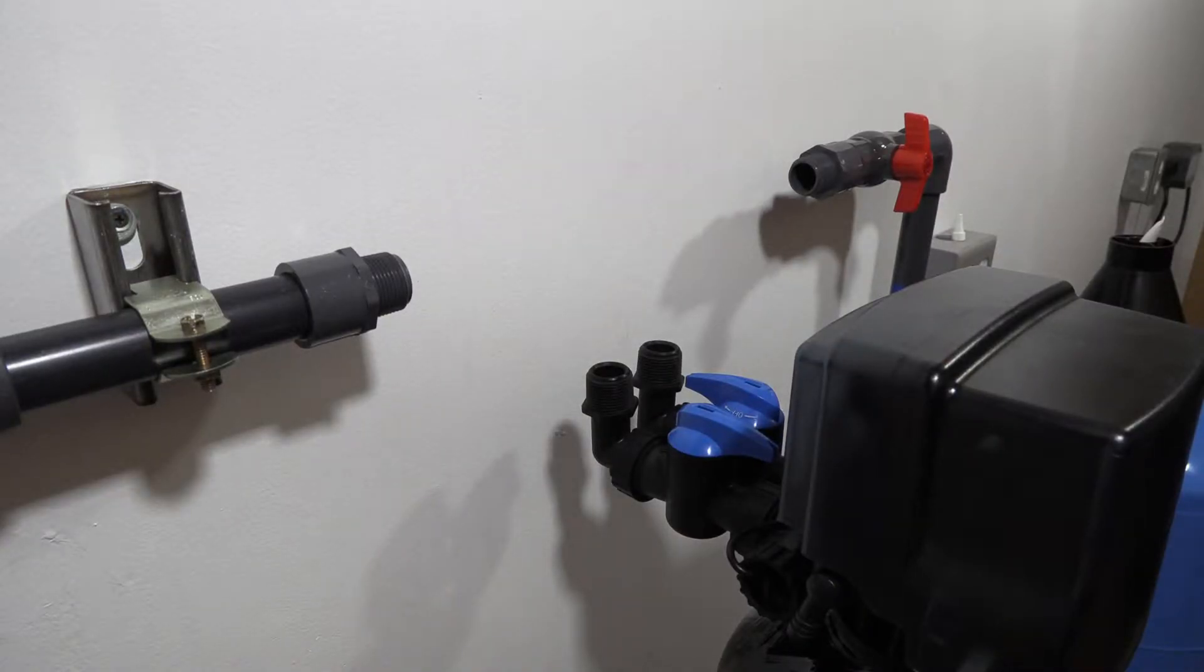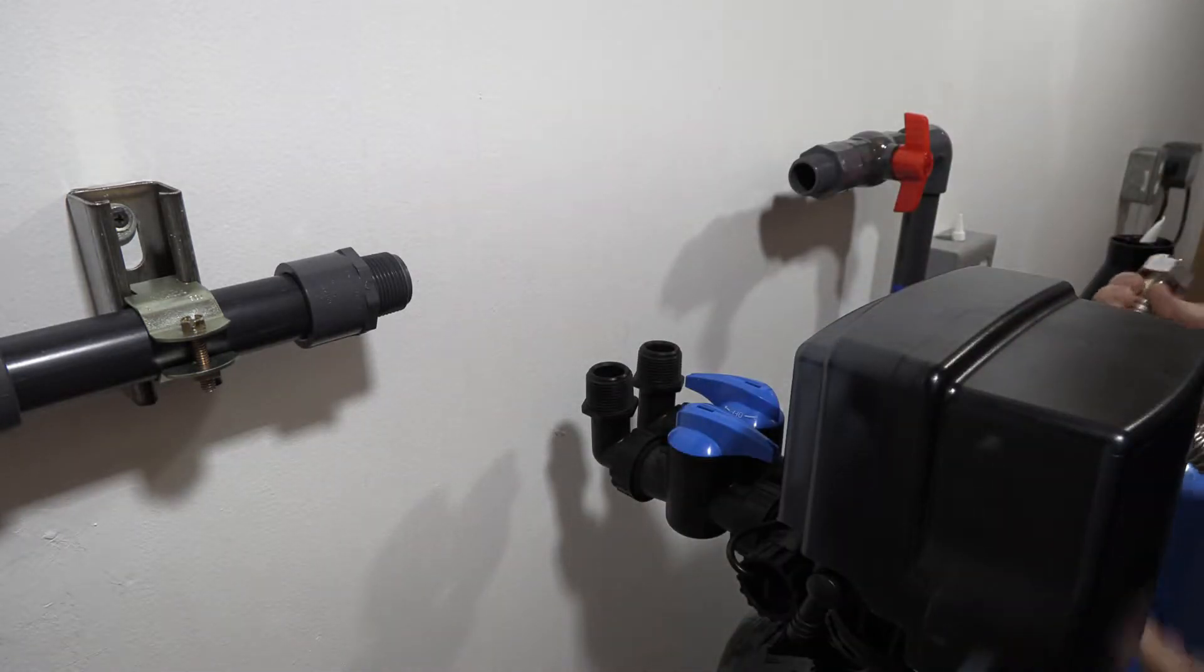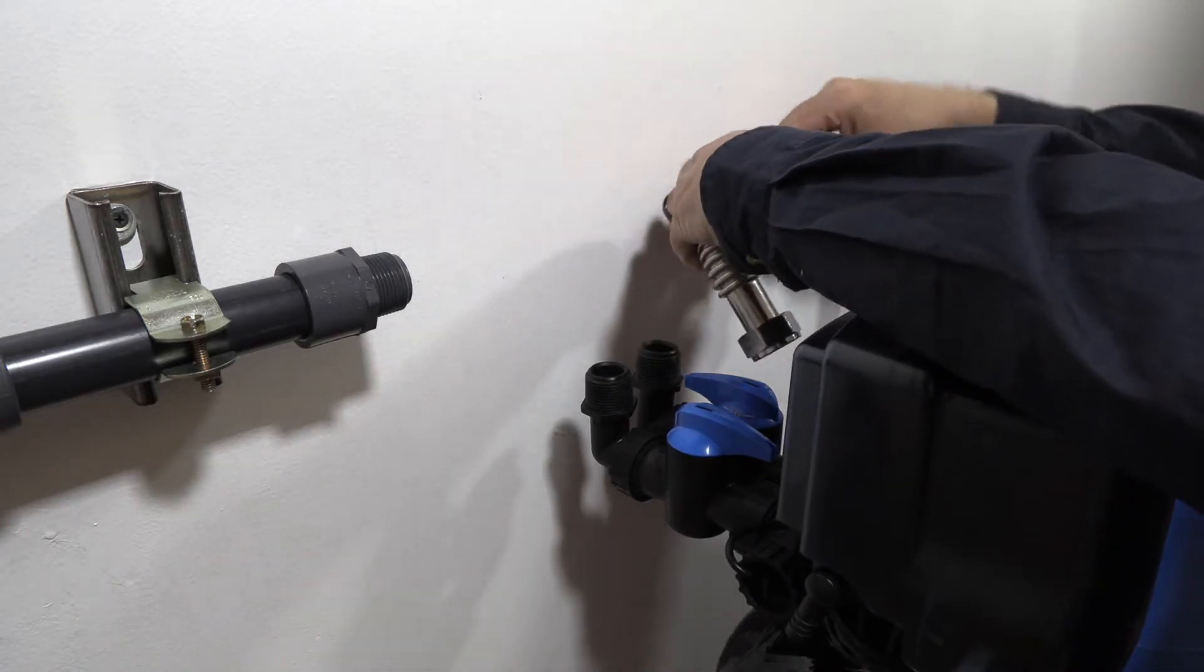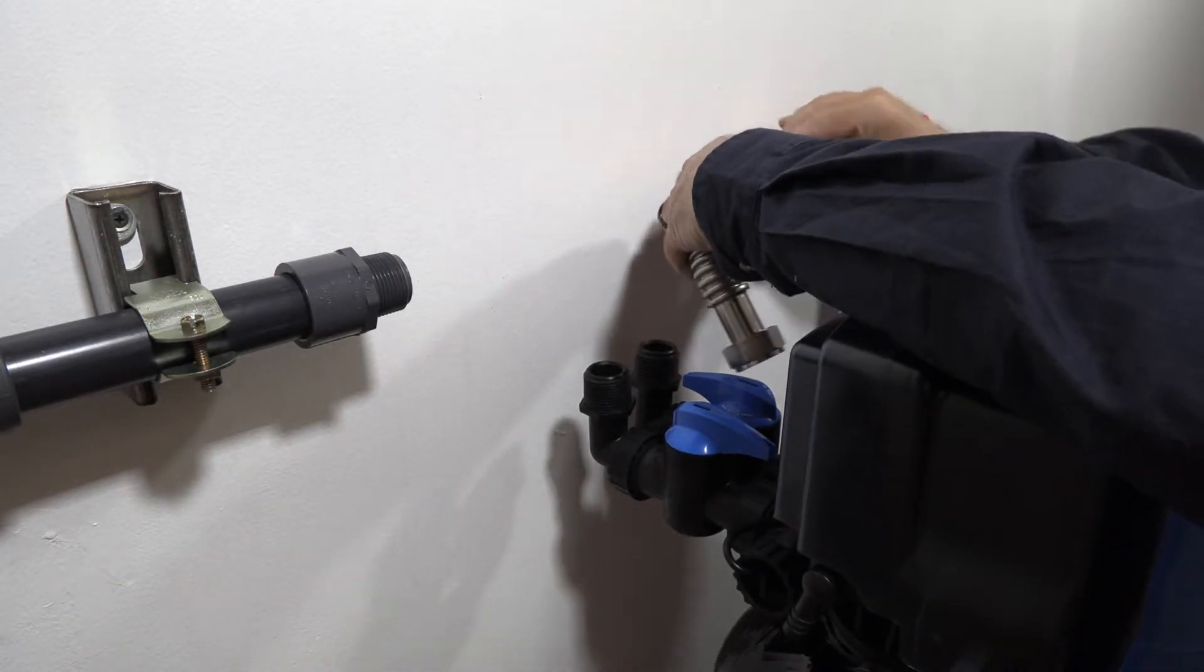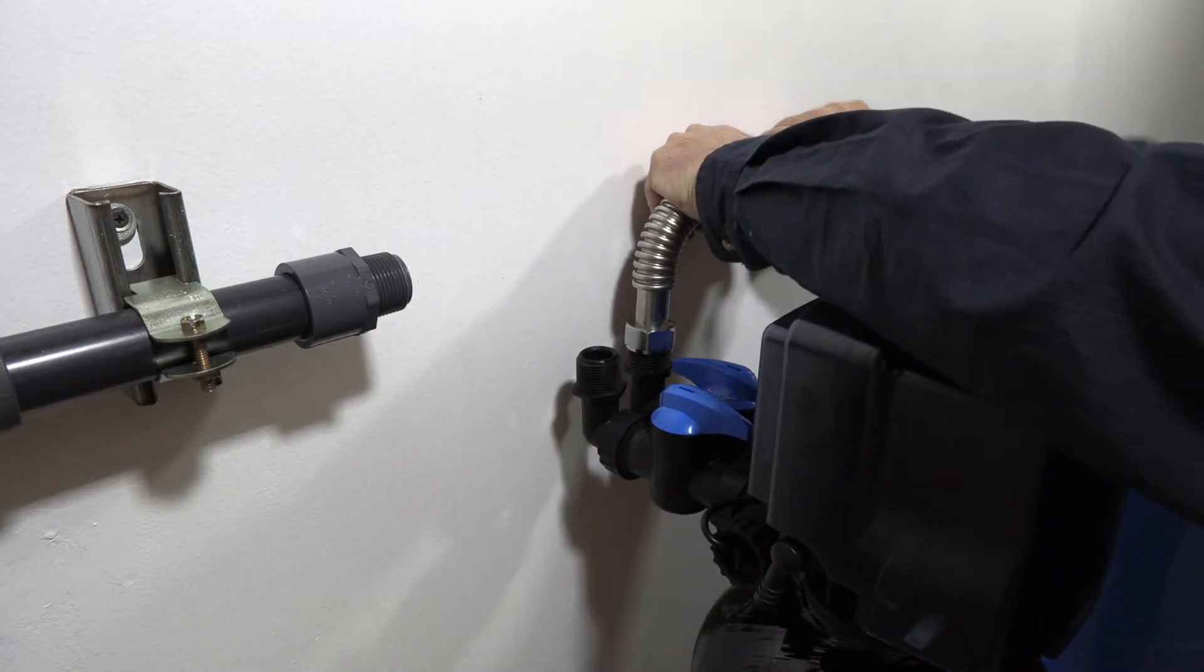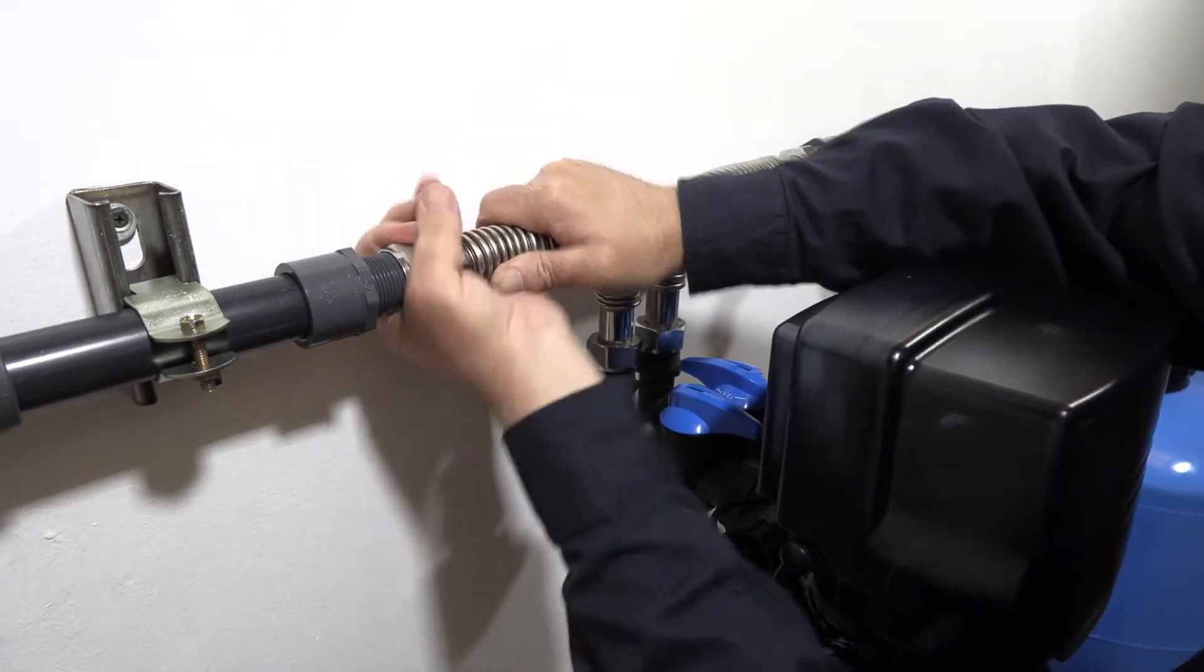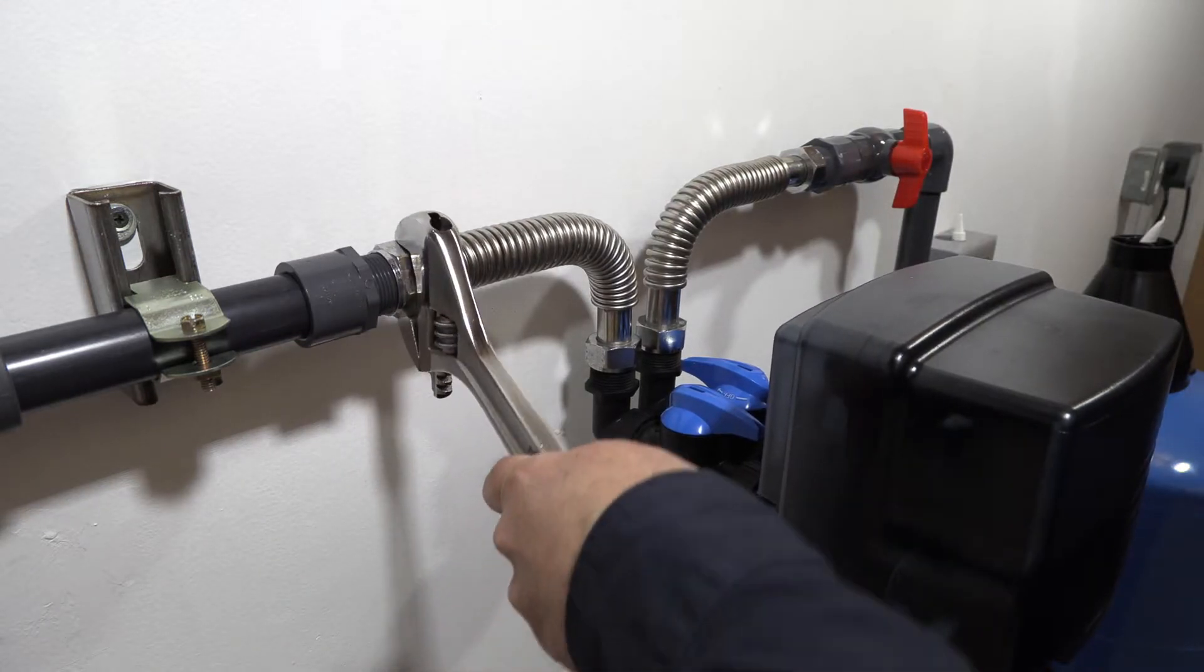We're going to install our inlet and outlet valves or flex lines. We do sell these as an accessory if you're interested. These guys just have little rubber seals that seal on the inside against the seat, so we'll go ahead and snug these guys up.